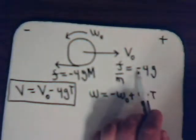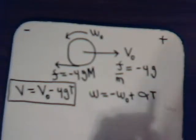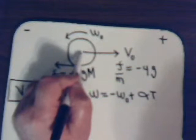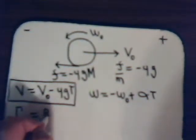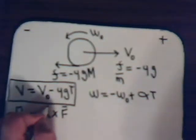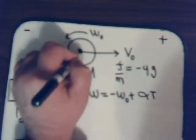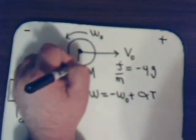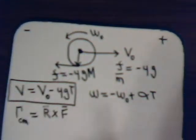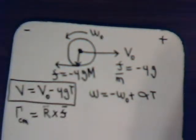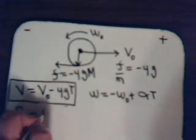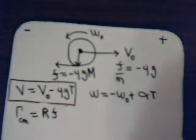We determined the linear acceleration easily. For the angular acceleration, we take the torque about the center of mass. For any torque, the expression is a position vector taking the cross product with the force. Here, the force is the frictional force, so the position vector is just the radius R of the ball. Since R and the frictional force F are perpendicular, the magnitude of the cross product is simply R times F.